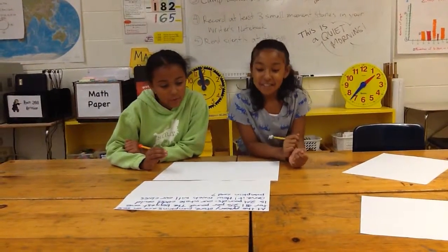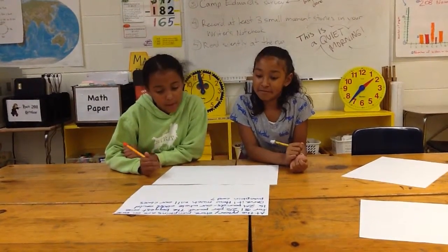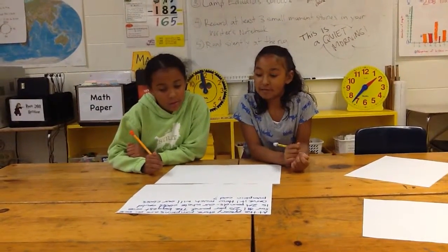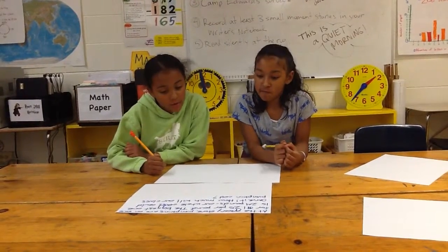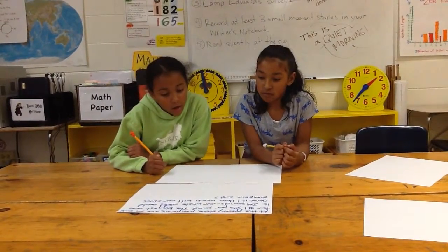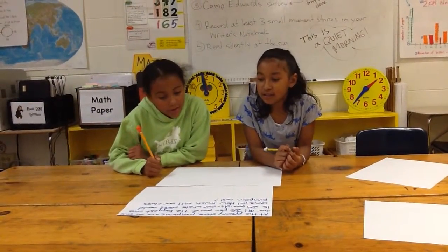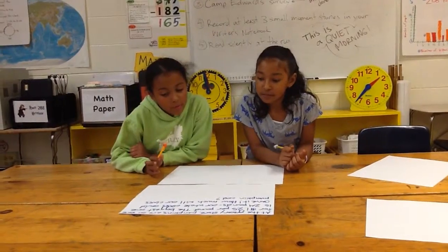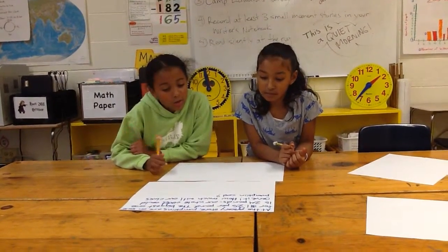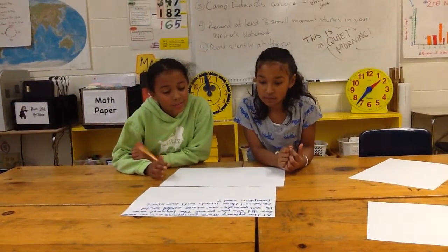Pumpkins are on sale for $1.25 per pound. The biggest one is 24 pounds. Our whole class could carve it. How much will our class pumpkin cost?